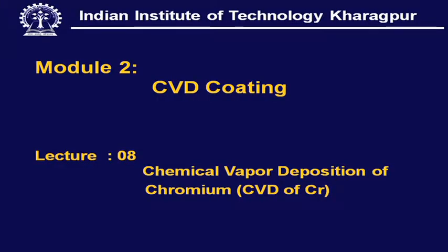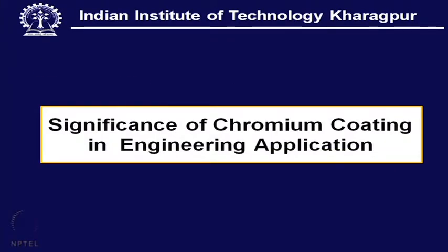Chemical vapor deposition of chromium — that means, it is CVD of chromium. Now, let us see what is the significance of chromium coating in engineering applications.